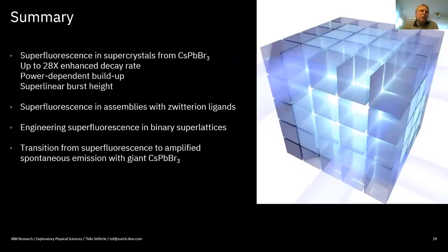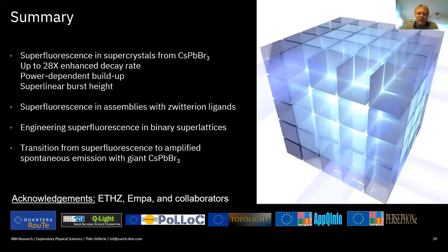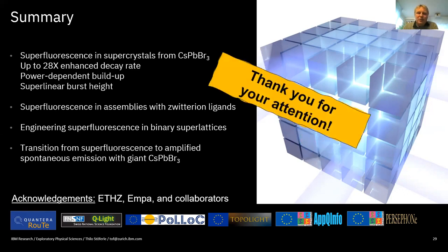In conclusion: we observed superfluorescence in perovskite nanocrystal super crystals with up to 28 times enhanced radiative decay rate. We demonstrated these signatures in zwitterion-ligand assemblies and showed that superfluorescence can be engineered by changing the crystal lattice structure. Finally, we showed superfluorescence also occurs in continuous bulk-like systems, and studied the transition from superfluorescence to amplified spontaneous emission. We acknowledge our partners at ETH and Empa, all collaborators, and the funding agencies supporting our students.